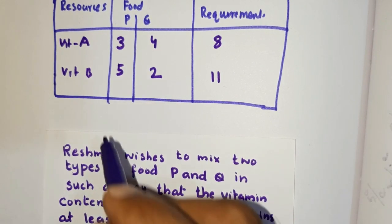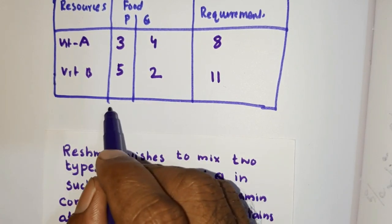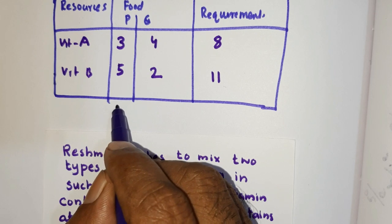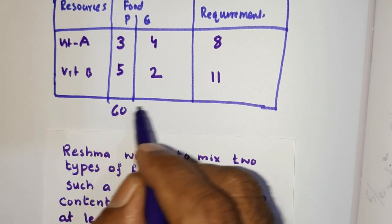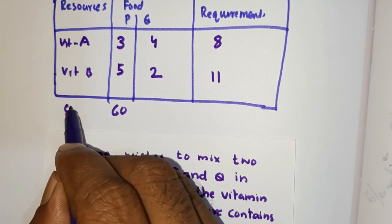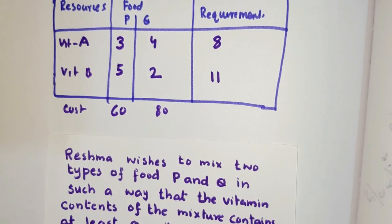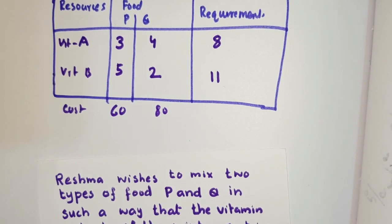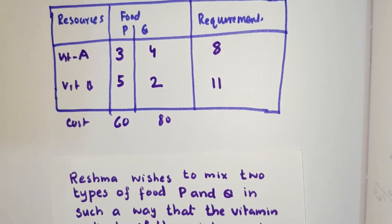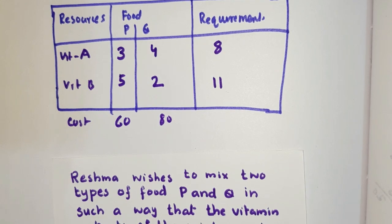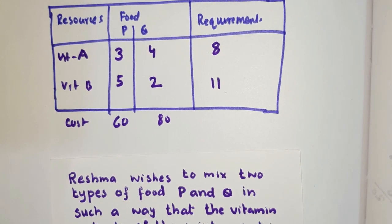Food P costs 60 rupees per kilogram. We want to determine how many kilograms of P and Q to use so that we get the minimum cost.